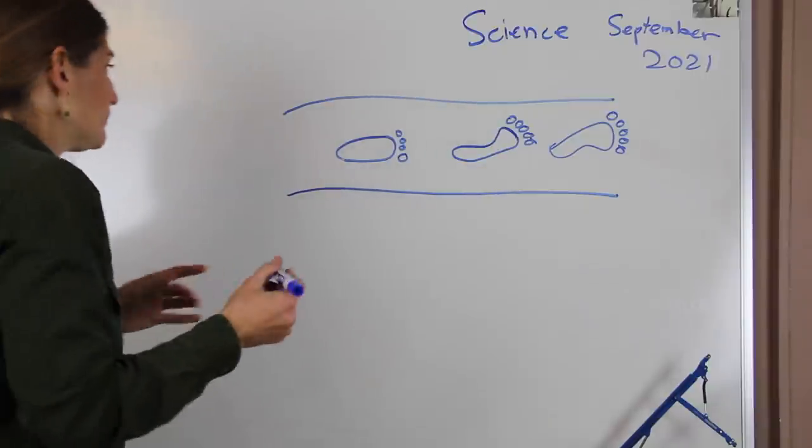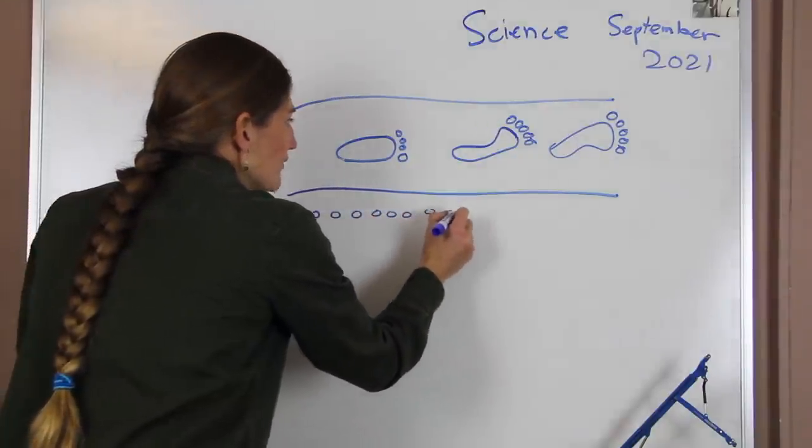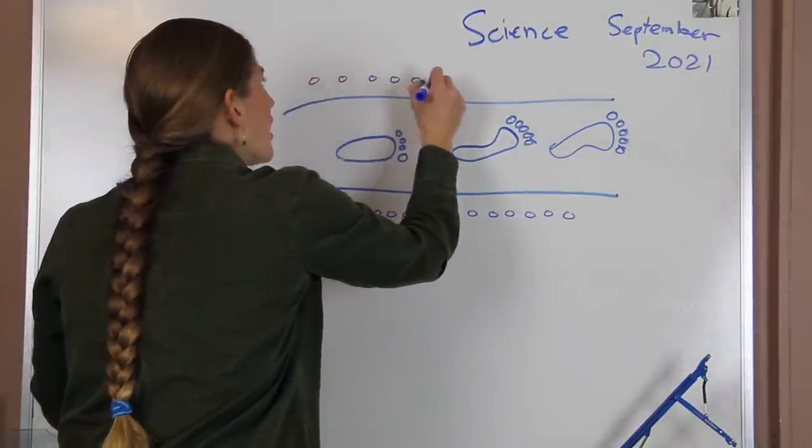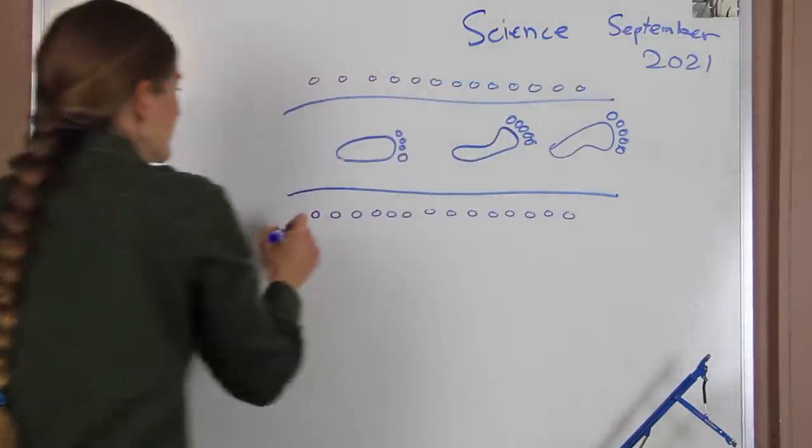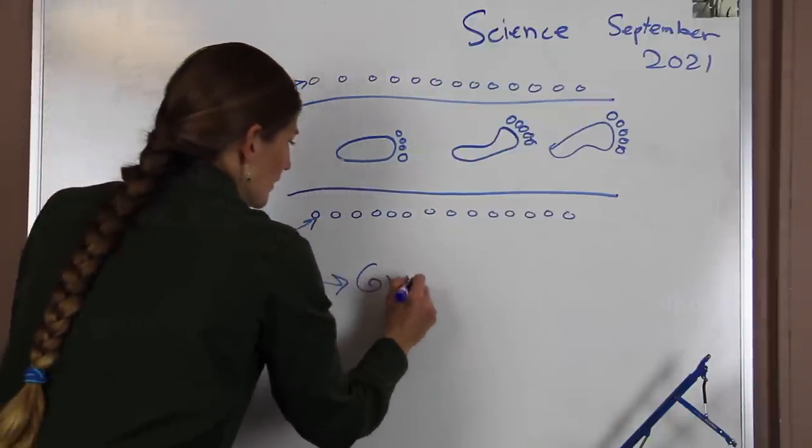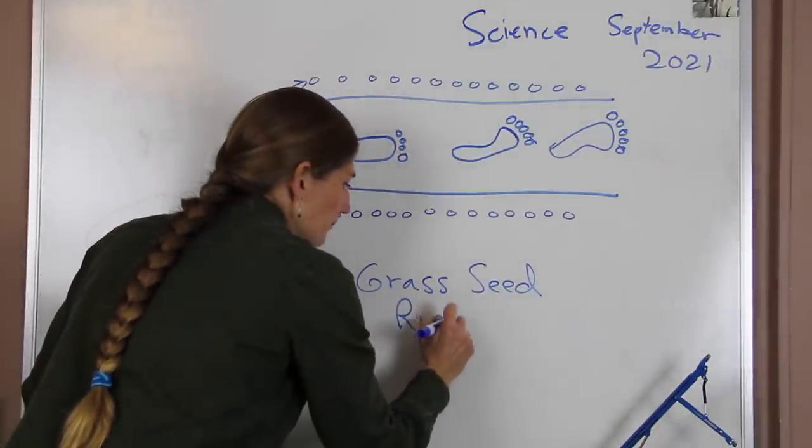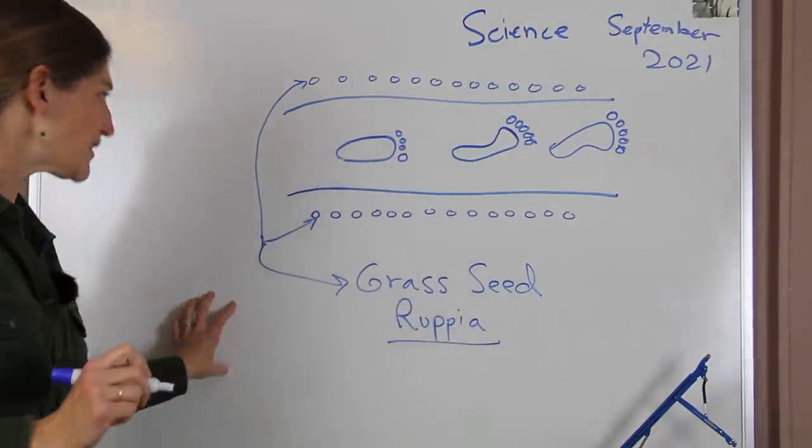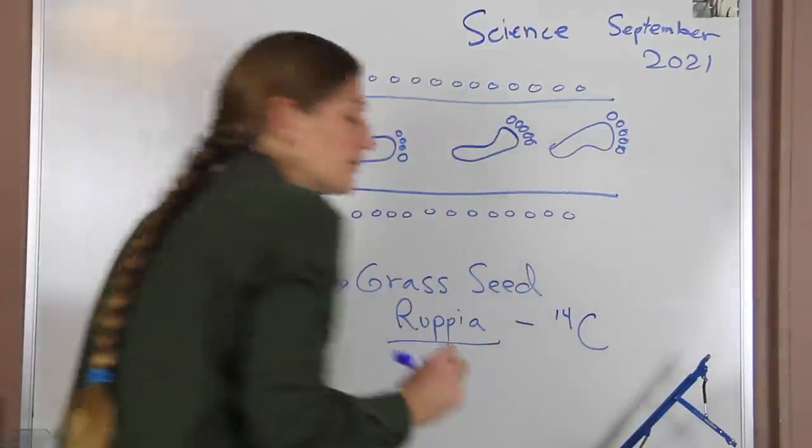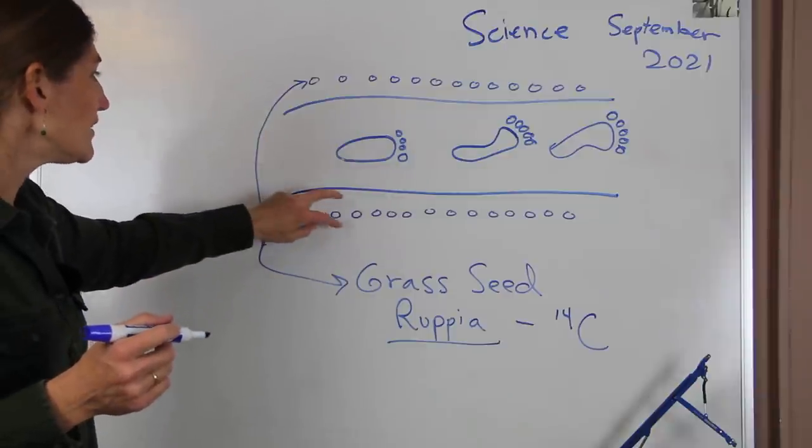But how old are they? Well, since we don't have ash, researchers got really creative. They started looking through these layers and they found one set of tracks that were sandwiched between layers of rock that had seeds. These little circles are representing a grass seed - an ancient seed called Ruppia. The cool thing about this Ruppia is because they found it below and above the tracks, they were able to use radiocarbon dating, Carbon-14, to figure out how old the seeds were below the footprints and above the footprints.